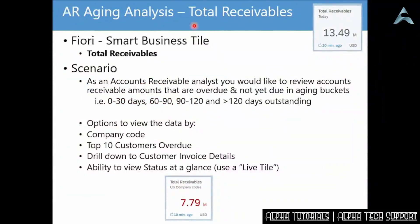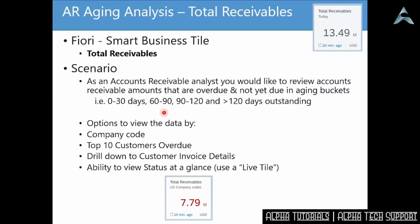Now we're going to look at AR aging analysis. The first smart business app is called Total Receivables. The scenario is that as an AR analyst, you want to review accounts receivable for amounts that are overdue and items not yet due in different aging buckets — 0 to 30 days, 60 to 90 days, or 90 to 120 days. Once looking at items in these age buckets, you can interact with the data: view split, slice and dice by company code, look at the top 10 customers overdue, and drill down to customer invoice details. We'll also show you how to personalize the tile to get status at a glance using a live tile — for example, personalizing to see U.S. company codes with 7.79 million total receivables.